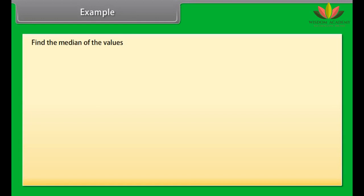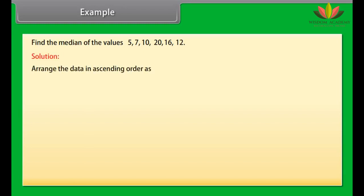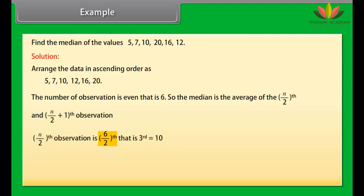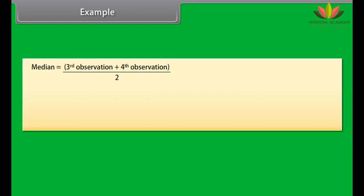Example: Find the median of the values 5, 7, 10, 20, 16, 12. Solution: Arrange in ascending order: 5, 7, 10, 12, 16, 20. The number of observations is even, that is 6. So the median is the average of the (n/2)th and (n/2+1)th observations. The 3rd observation equals 10 and the 4th observation equals 12. Median equals (10 plus 12) divided by 2, which equals 11.